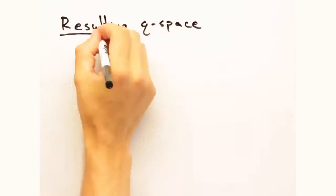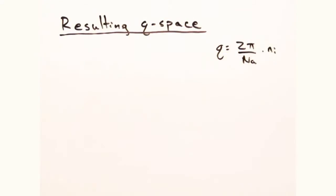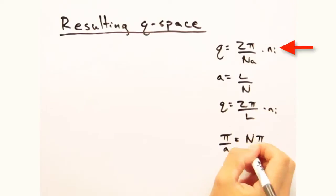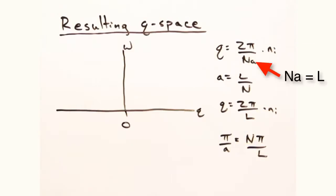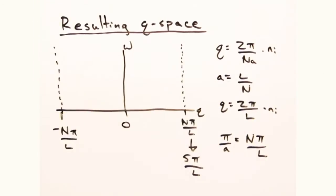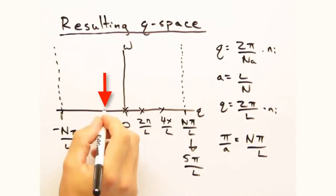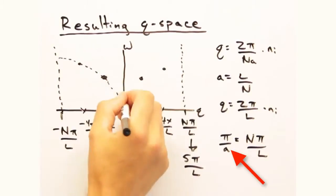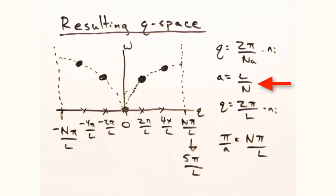How would our Q space look? Well, we know Q is 2 pi over capital N times A, all of that times some integer n i. And that n A is the total length L. So there would be one mode every 2 pi over L in Q space. But the edge of Q space is at pi over A. And we know A is L over N. So the edge of our Q line would be at capital N pi over L.